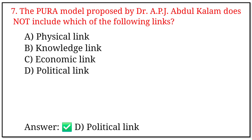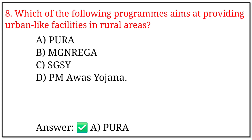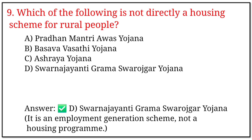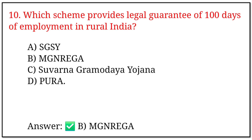7. The PURA model proposed by Dr. A.P.J. Abdul Kalam does not include which of the following links? Options a, b, c, and d. The correct option is d: political link. 8. Which of the following program aims at providing urban-like facilities in rural areas? Options a, b, c, and d. The correct option is a. 9. Which of the following is not directly a housing scheme for rural people? The correct option is d: Suvarna Jayanti Grama Swarajyar Yojana — it is an employment generation scheme, not a housing program.